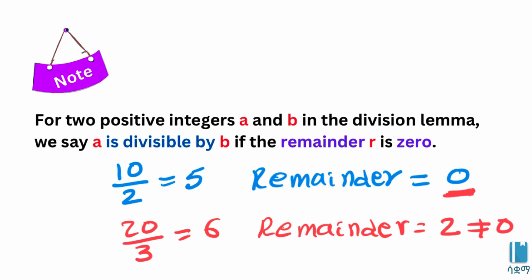20 is not divisible by 3. The remainder is not 0. If you have any questions, please give us a thumbs up.